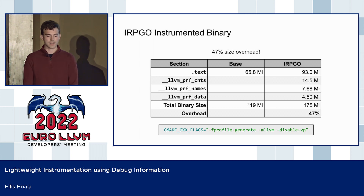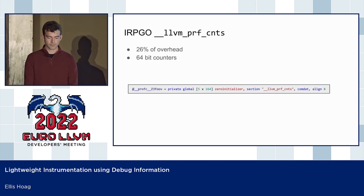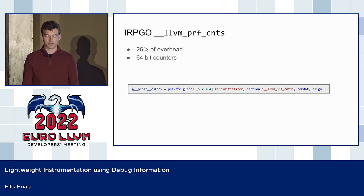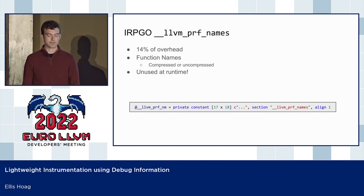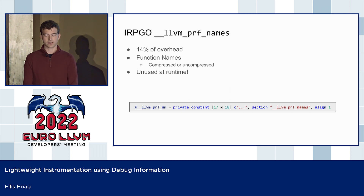Let's take a closer look at the extra sections in detail. The first is the LLVM prof counts section, which stores the global variables that track edge counts in instrumented builds. In the LLVM IR, there is a global counter variable for a function foo whose type is an array of 64-bit integers — these numbers tell us how many times a given basic block was executed. Next is the LLVM prof names section, whose job is to store the names of all instrumented functions in the binary. These names can be compressed at build time, and this section is only read when dumping the raw profiles — otherwise it is completely unused at runtime.